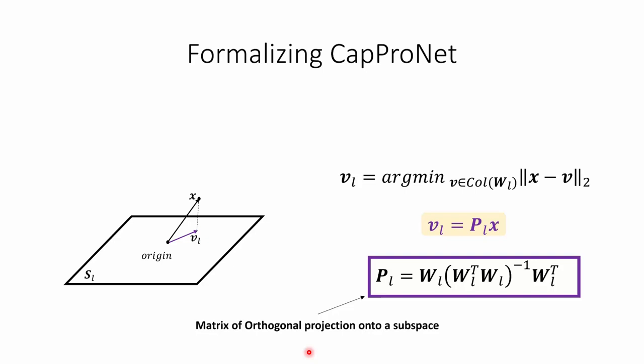Using some algebraic operations and substitution, we arrive at the final formula, where sigma is basically W transpose W inverse. For simplicity, we define it as sigma.